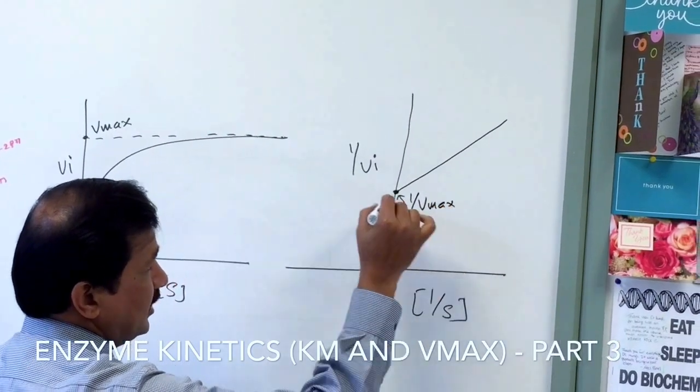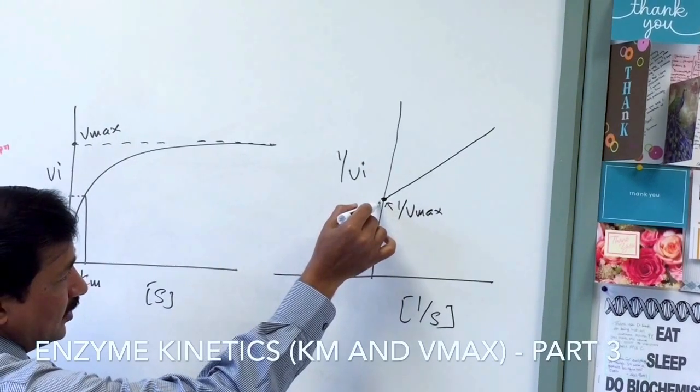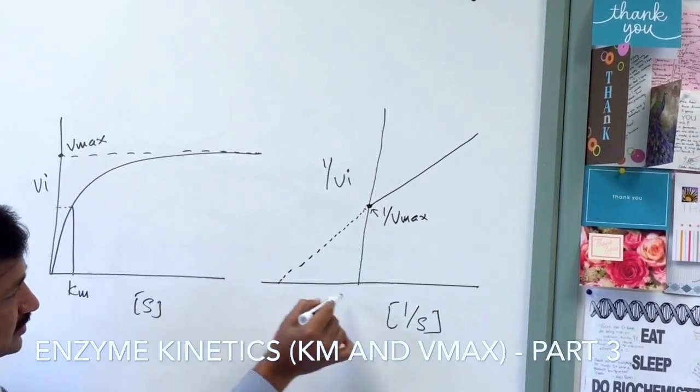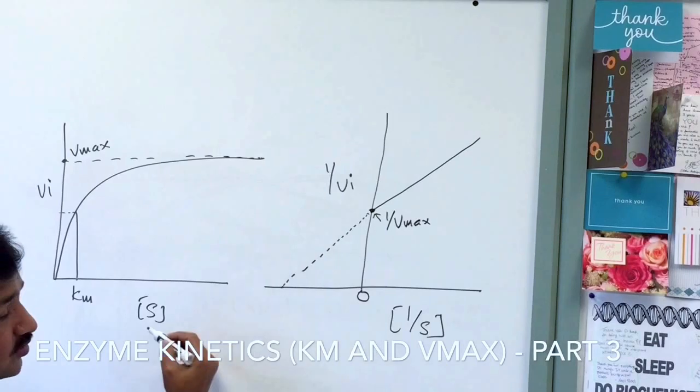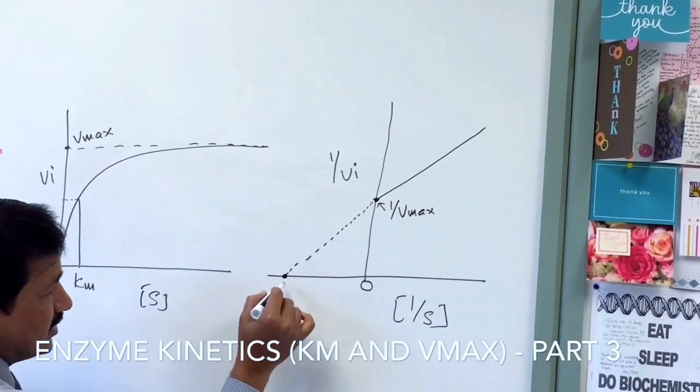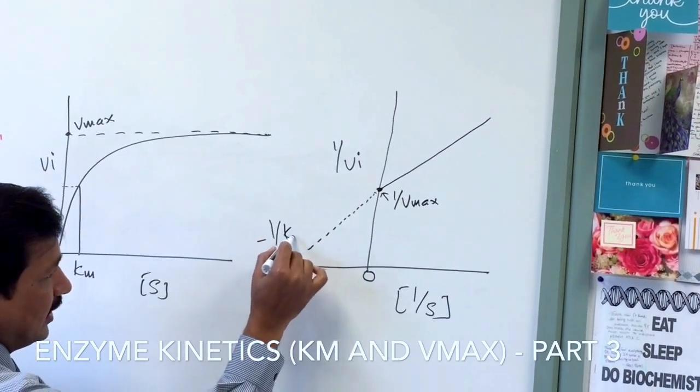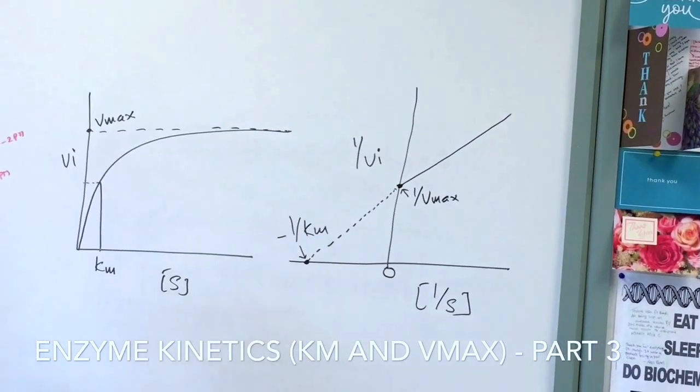If you elongate that line on the other side of the x-axis, on the negative side of the x-axis, the left-hand side, it meets at some point and this particular point we call minus 1 over Km.